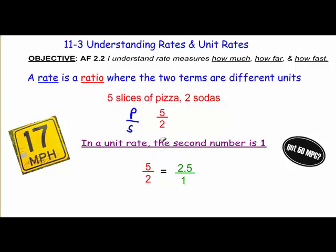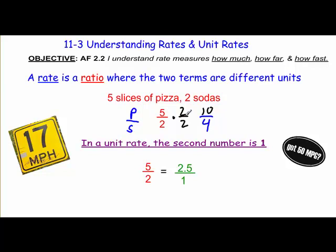So if for every five slices of pizza I eat, I drink two sodas, then if I only drink one soda, I've only eaten two and a half slices of pizza. But what if I drank four sodas? Our labeling is important, so I put two sodas here, four here. How do I turn two into four? I can multiply by two — use a magic one of two over two. Five times two equals ten. So the equal ratio for five to two is ten to four. If I drink four sodas, I've eaten ten slices of pizza.